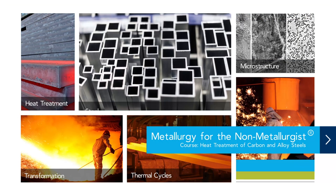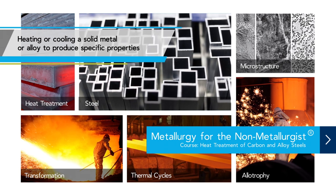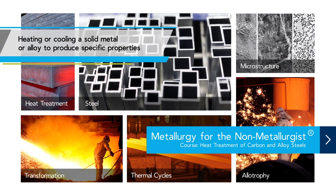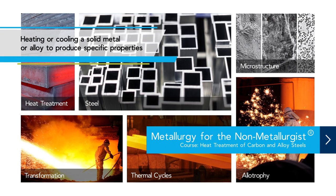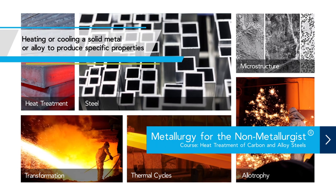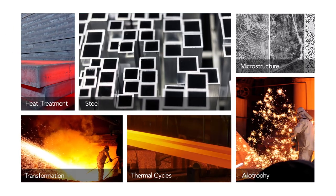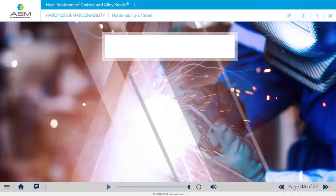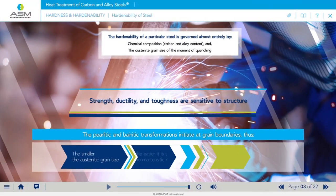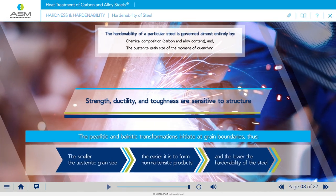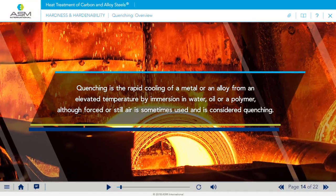The process of heat treating metals and metal alloys is simply heating or cooling a solid metal or alloy in a way designed to produce specific properties. Properties such as strength, ductility, and toughness are sensitive to structure and therefore may be controlled by heat treatment.